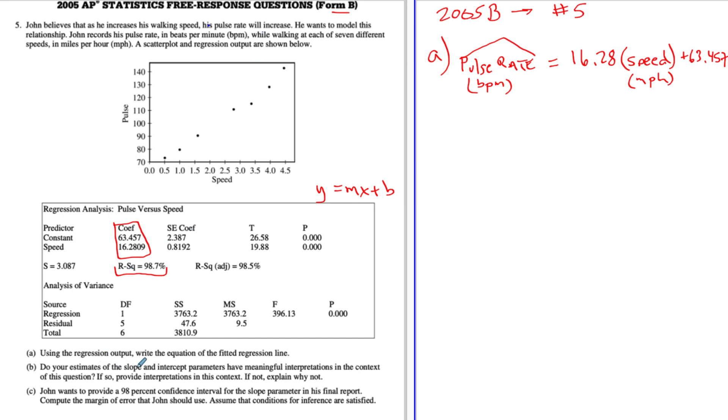Do estimates of the slope and intercept parameters have meaningful interpretations in the context of this question. So they want us to interpret these two numbers right here, 16 and 63. So I would say, yeah, well, let's do the first one, 16. What does that number mean in the context of this problem? That is the slope. Remember, a lot of teachers teach slope way back in algebra one, change in y over change in x. So in this problem, slope would be the change in pulse rate over the change in speed.